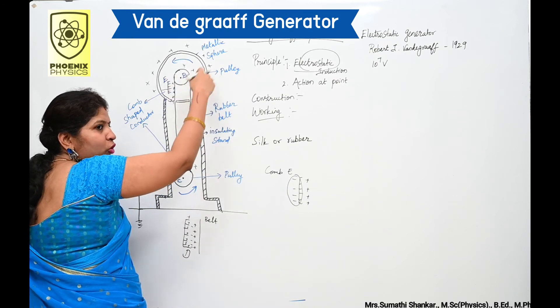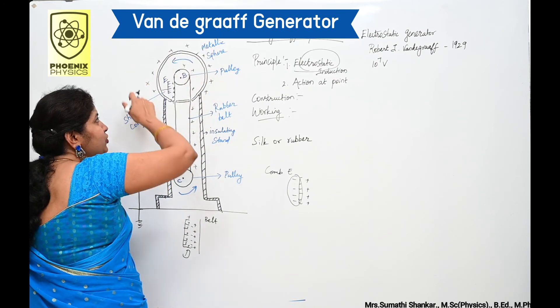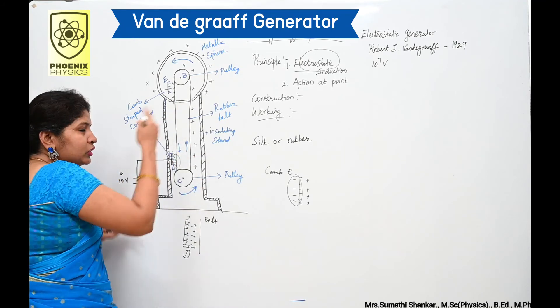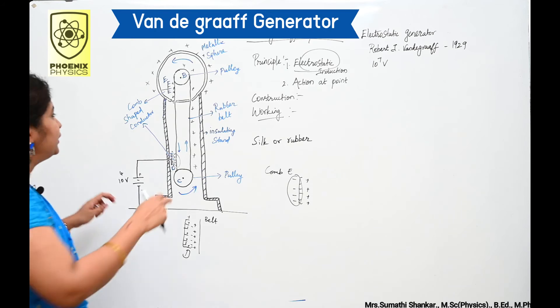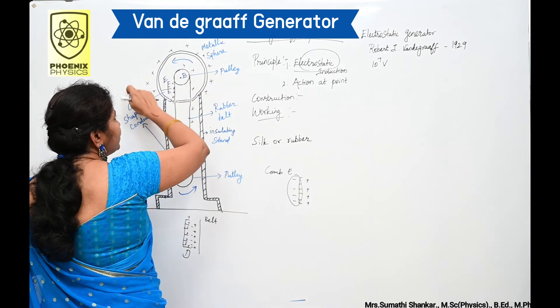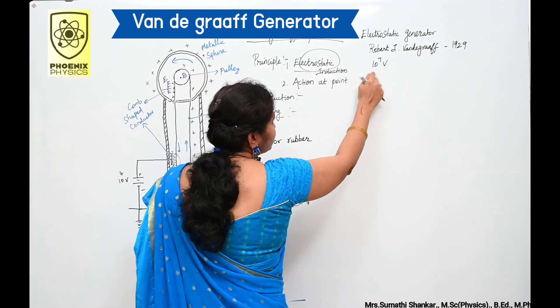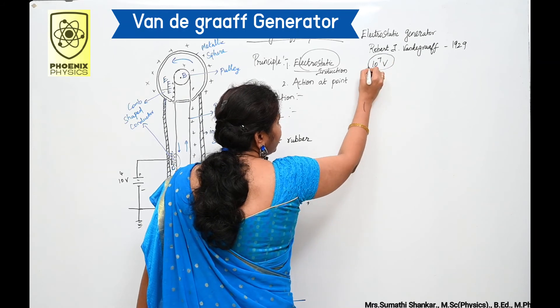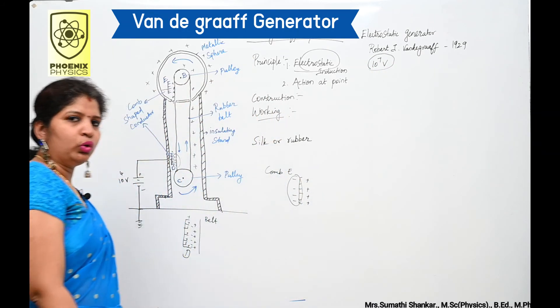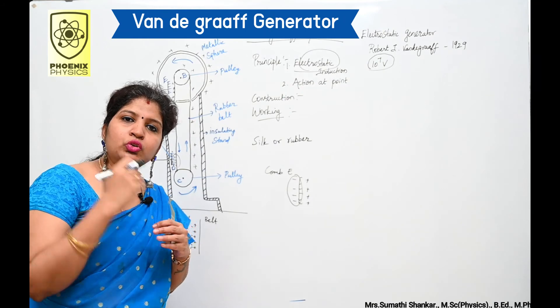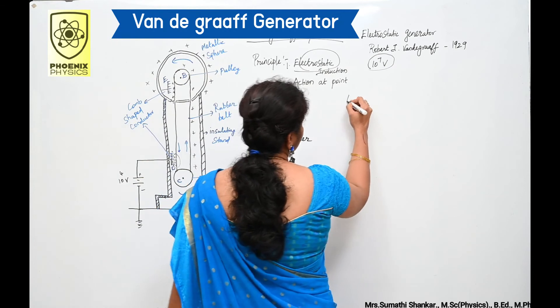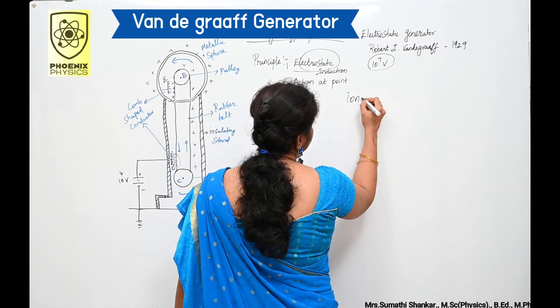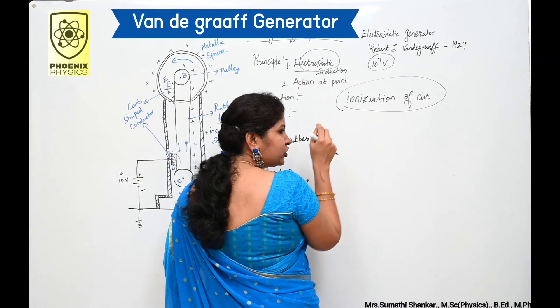And delivers more positive charge on the surface of the sphere. This process continues until the outer surface reaches the potential difference of order of 10 to the power of 7 volts. We cannot store charges beyond this limit since the extra charge starts leaking to the surroundings due to ionization of air.